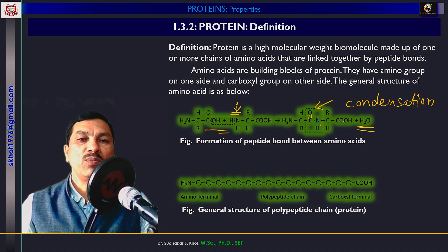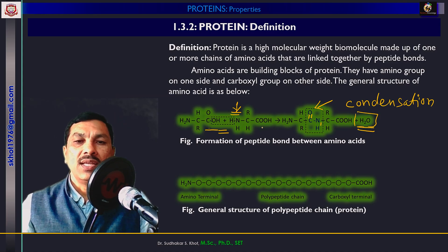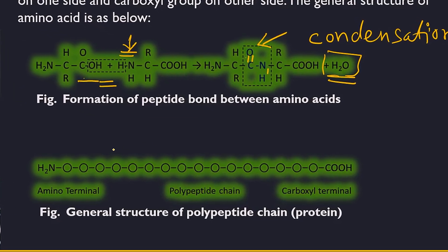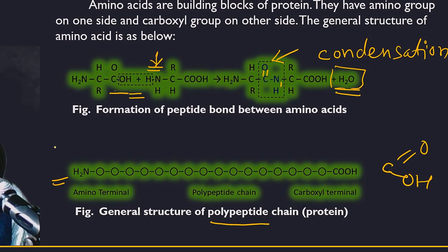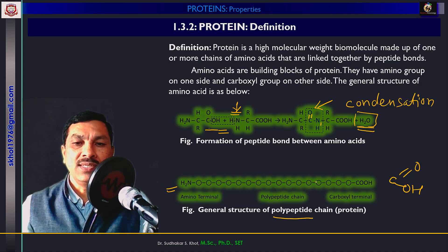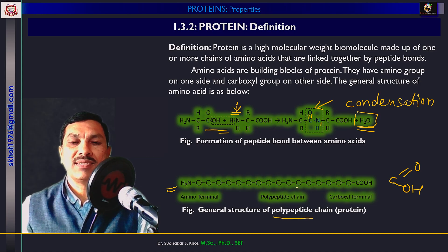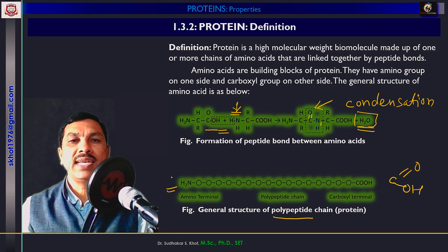So in condensation, two or more molecules connect with each other by liberation of water molecules. When many amino acids are connected with each other, they form a chain called a polypeptide chain. In this chain, one end will have the NH₂ group — this is the amino terminus (N-terminus) — whereas the other end with the COOH carboxylic group is called the carboxylic terminus (C-terminus). This structure of the polypeptide chain is also called the rattlesnake model, where COOH forms the fangs and the amino group forms the tail.